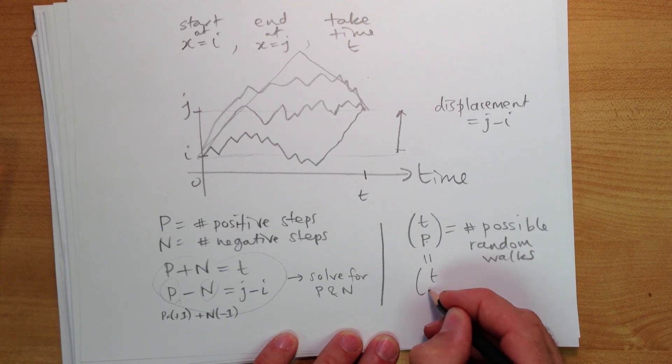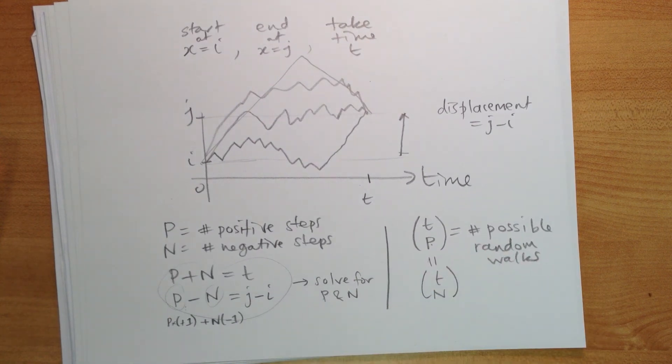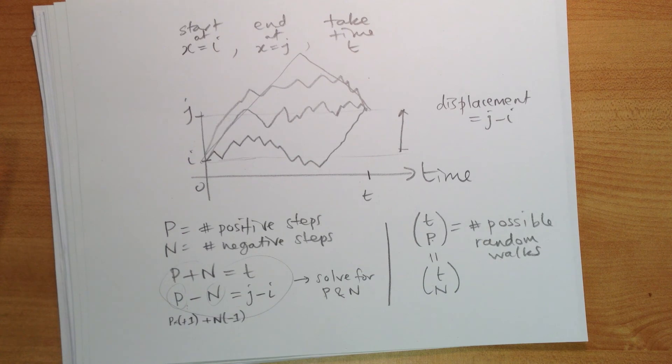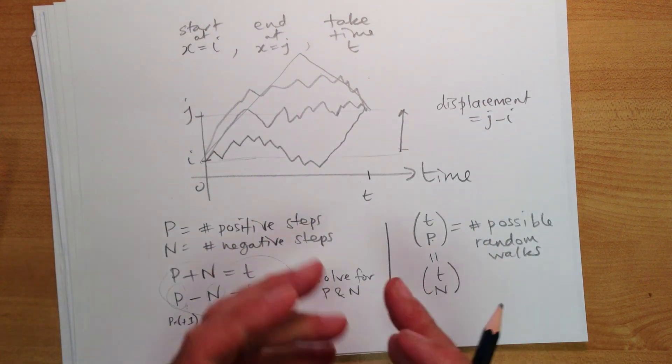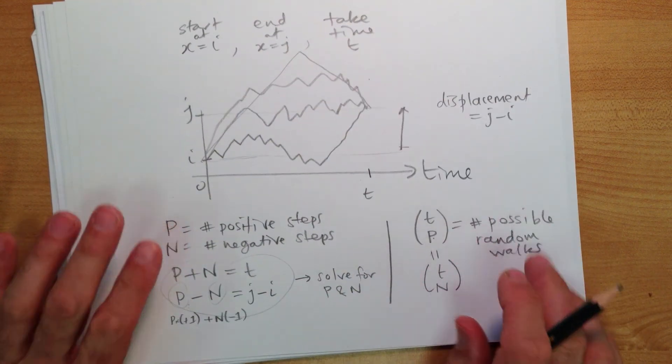It has to, of course, equal just the structure of these things. It's t choose the number of negative steps as well, because you can think about putting the negative ones in as well. You should see that either way is fine, that should do it.